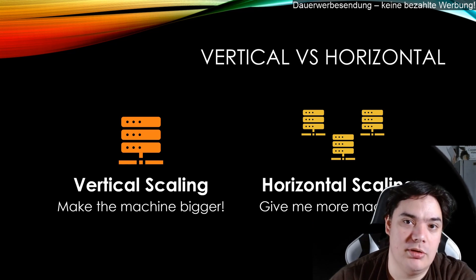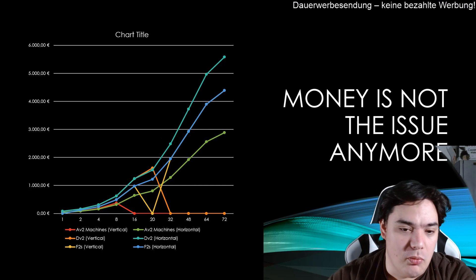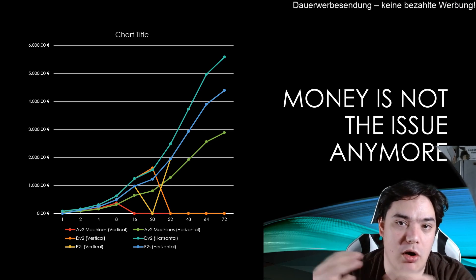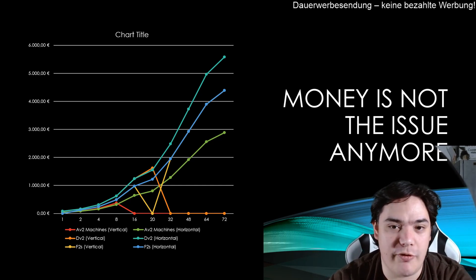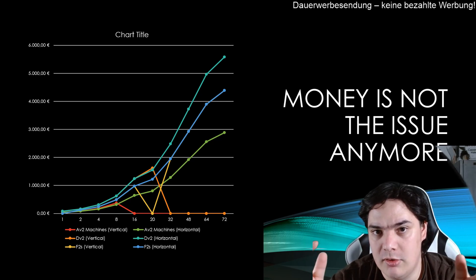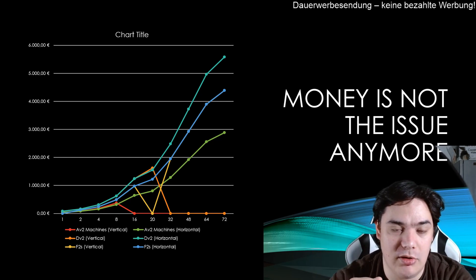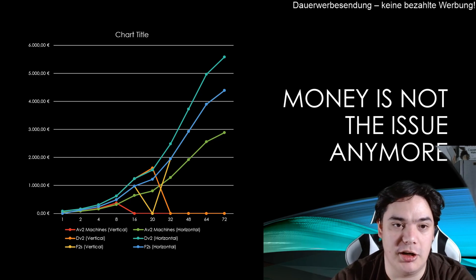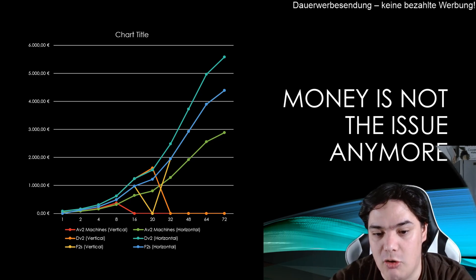Our software needs to work with horizontal scaling and be able to do that. When I started backend development, scaling upwards — making the machine bigger — was cheaper at the beginning, but very fast after four or eight CPUs, scaling horizontally became extremely cheaper. Making the machine bigger normally gets more expensive in the long run, whereas adding more machines is basically a linear cost development.